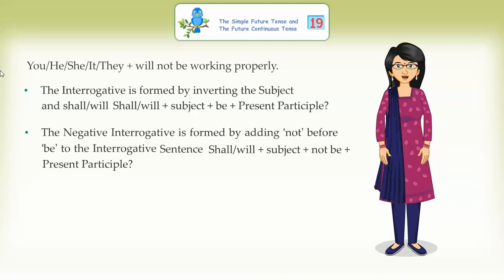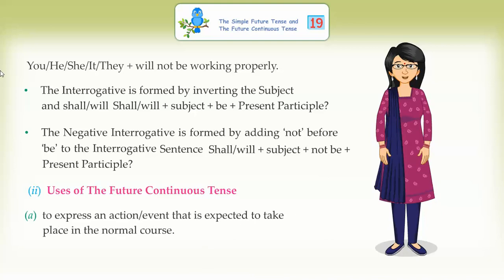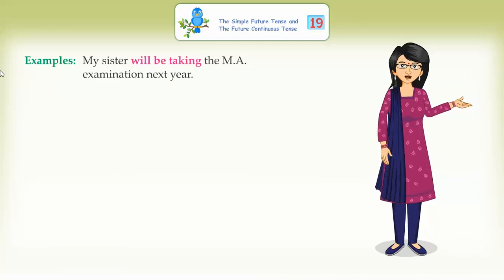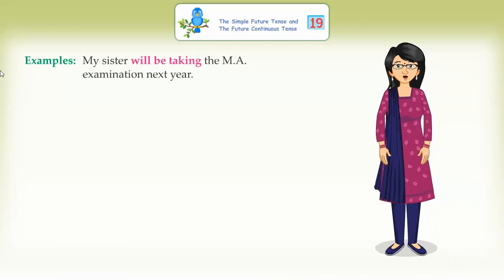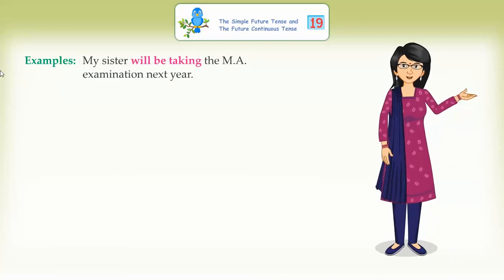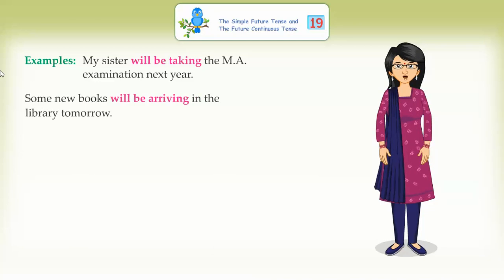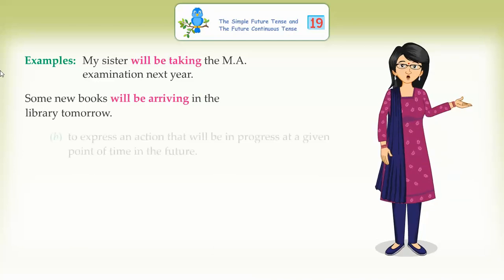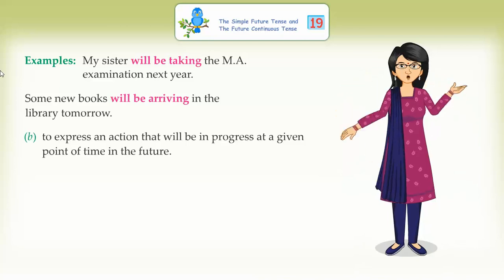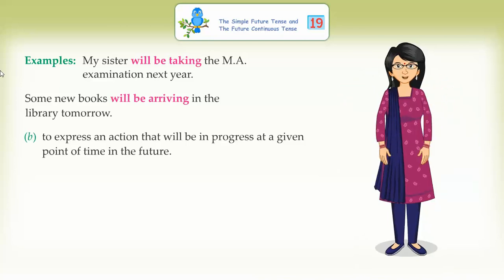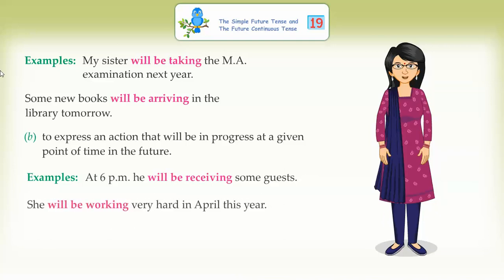Uses of the Future Continuous Tense: To express an action or event that is expected to take place in the normal course. Example: My sister will be taking the MA examination next year. Some new books will be arriving in the library tomorrow. To express an action that will be in progress at a given point of time in the future. Examples: At 6 PM, he will be receiving some guests. She will be working very hard in April this year.